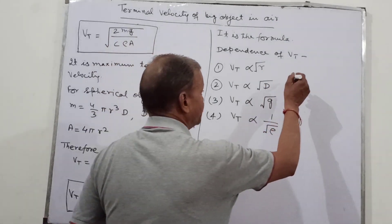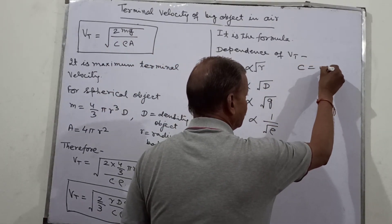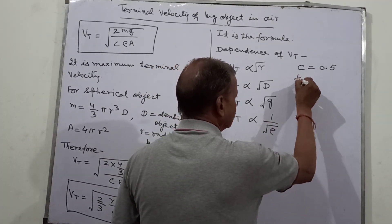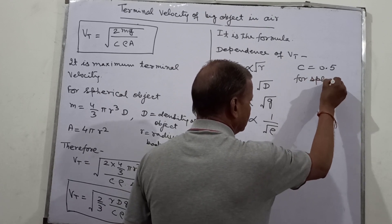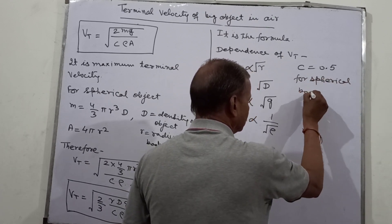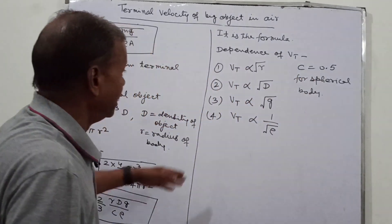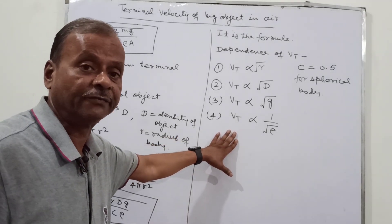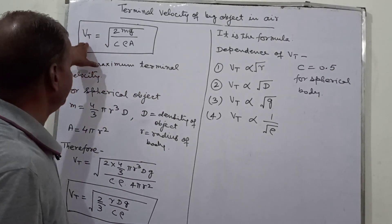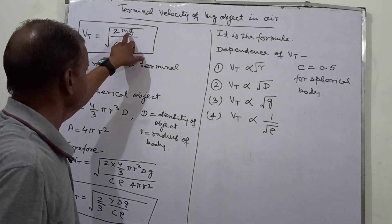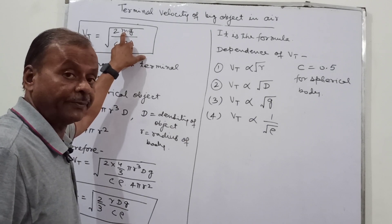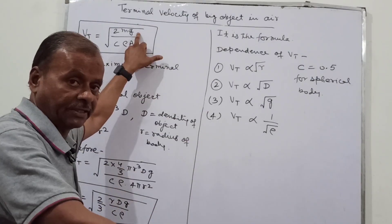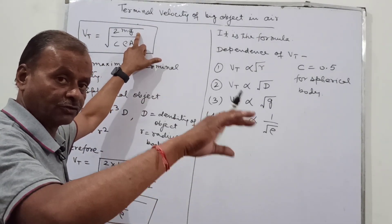Fourth, Vt is proportional to one upon the square root of rho, the density of the air. So because the density of the air is very small, Vt is large. For spherical bodies, the drag coefficient C equals 0.5. In general, for bodies of any shape, Vt is proportional to the mass of the object.